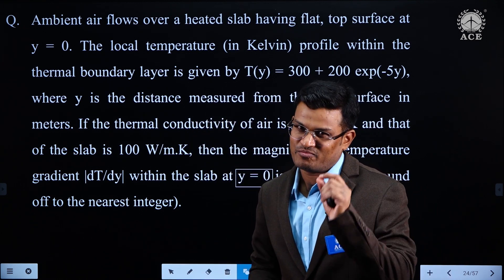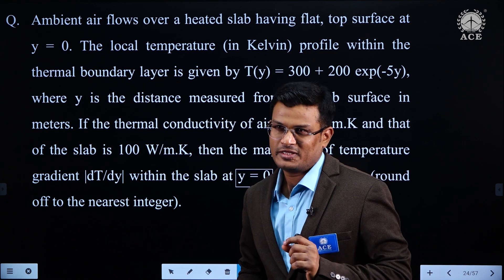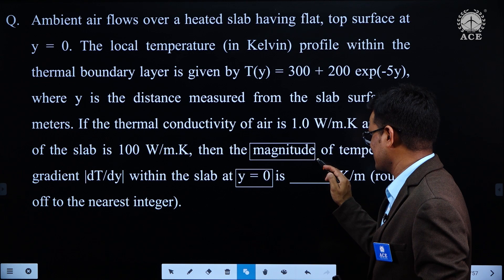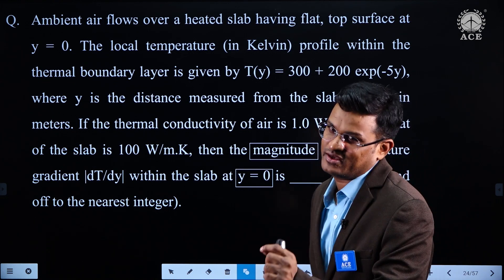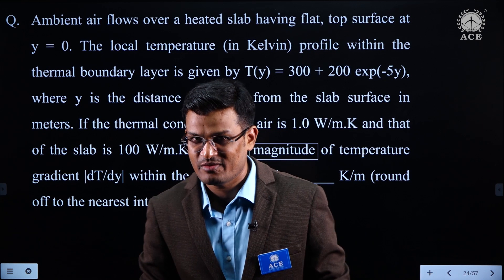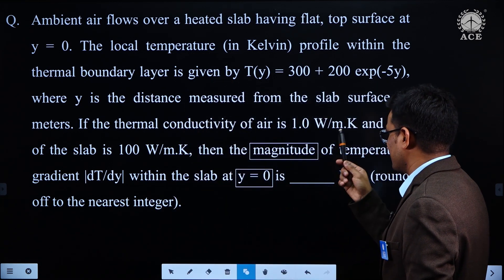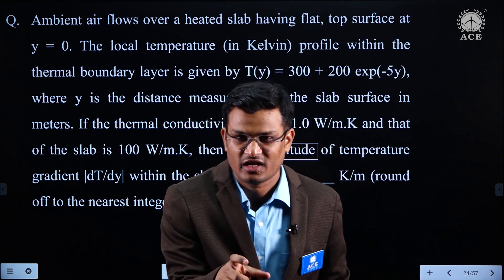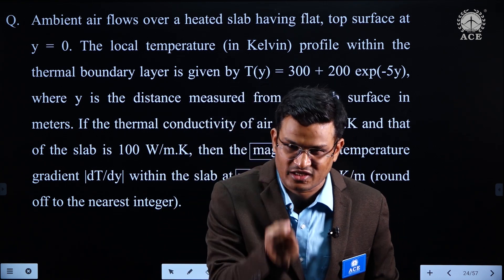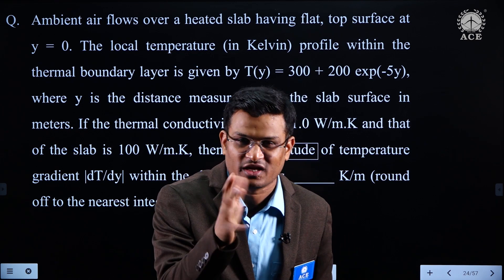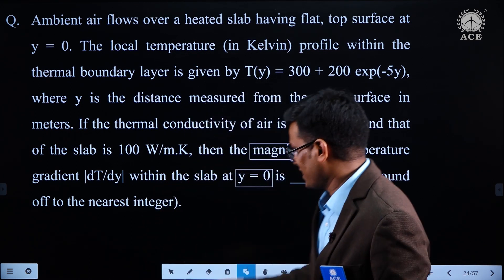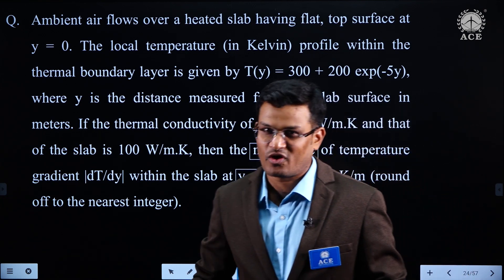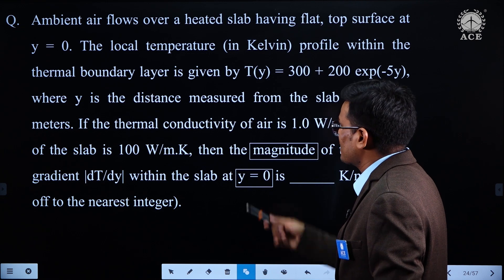The question is very simple, but there is a key point: the examiner is asking for the magnitude of the temperature gradient. It is clearly mentioned — the magnitude of dT/dy — with the mod sign given. The examiner is asking directly for the magnitude irrespective of sign. If you neglect this, you may get the wrong answer. Take care of that.